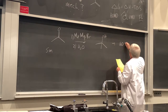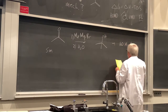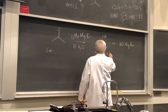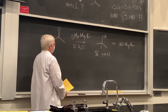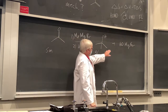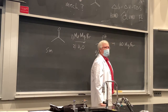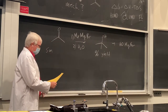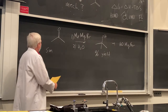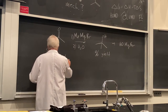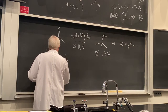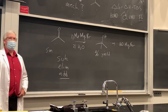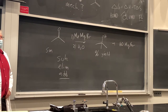We're quenching with water at the end and drawing the product. The byproduct in this case is magnesium hydroxide — a lot of times we wash that away. There can be a percent yield listed. That's a reaction arrow — not an electron-pushing arrow, not a resonance arrow, not an equilibrium arrow — just one direction. Grignard reactions are typically not reversible.